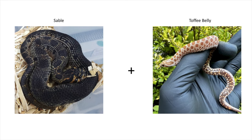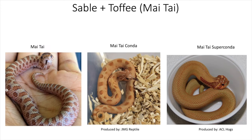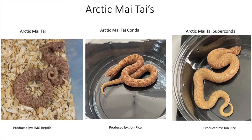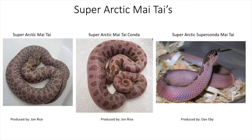Next we have sable combined with toffee belly, and this is probably my favorite combination with the sable — it gives you the mai tai. The first picture is actually my mai tai that I own. In the middle you have the mai tai conda and then the mai tai super conda. It's a very unique snake with a different orange color compared to the sunburst, almost like a copper penny. Adding the arctic gene gives you the arctic mai tai, arctic mai tai conda, and arctic mai tai super conda. The super arctic versions of the mai tai, the first two produced by John Rice, give them more of a purple appearance.